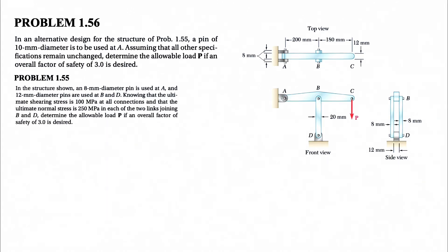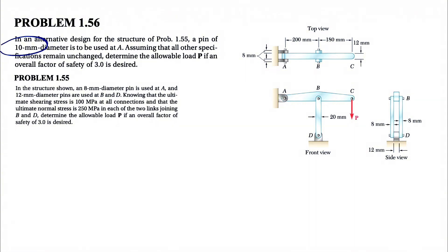We're going to be solving question 56 from the first chapter of the Mechanics of Materials textbook by Beren Johnson. This is a follow-up question to the previous one — we solved question 55 two videos ago. We just have a different design: the diameter of the pin at point A is 10 millimeters, as opposed to 8 millimeters in the previous question. All other specifications are assumed unchanged.